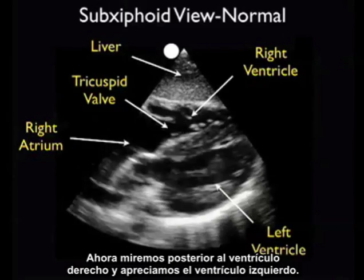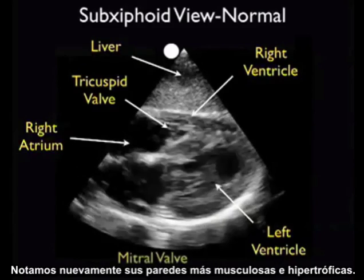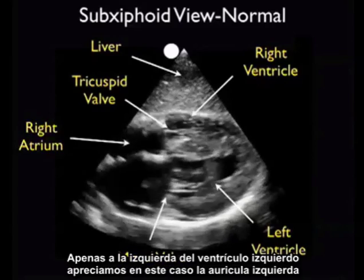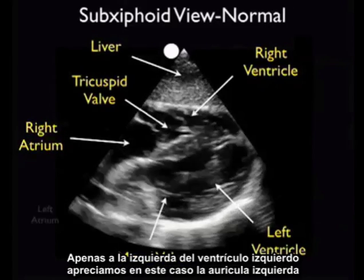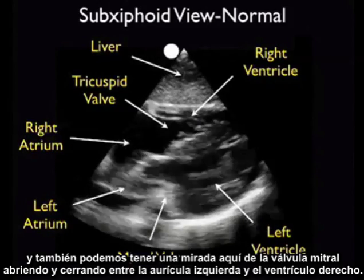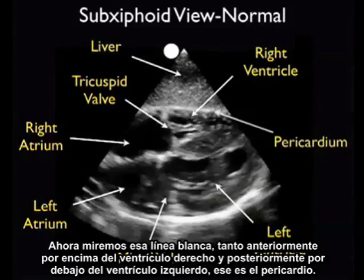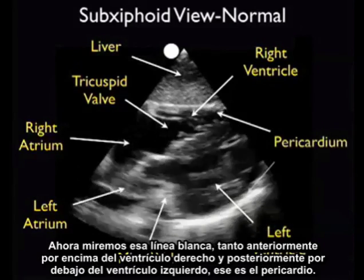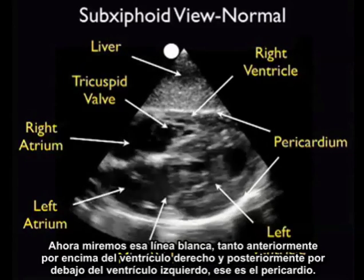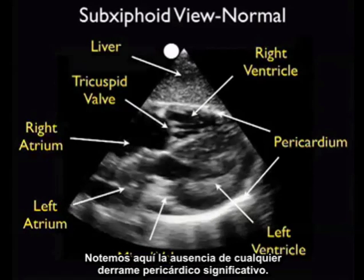Looking posterior to the right ventricle, we appreciate the left ventricle — notice again its more muscular and hypertrophic walls. Just to the left of the left ventricle we appreciate the left atrium, and we also get a glimpse of the mitral valve flipping up and down between the left atrium and left ventricle. Let's look at that white line both anteriorly above the right ventricle and posteriorly below the left ventricle — that is the pericardium. Note the absence of any significant pericardial effusion.